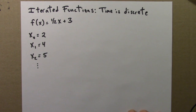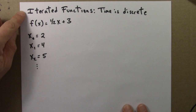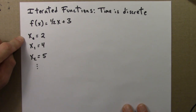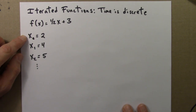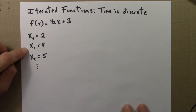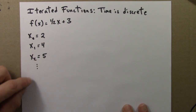There's one more aspect of iterated functions that I want to briefly mention: time is discrete in these iterated functions. So we start with a seed, x0 equals 2. We can think of that as the value at time 0. Then the first iterate is the value at time 1, and that's 4. The value at time 2, or the second iterate, is 5, and so on.